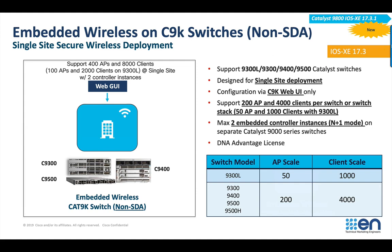This platform supports a scale of 200 APs and 4000 clients per switch or switch stack, and in a site you can go up to two switches, giving a total scale of 400 APs and 8000 clients in a single site. This is a totally non-STA deployment and does not need Cisco DNA Center for configuration or automation. It does however need Cisco DNA Advantage license, just like embedded wireless in STA mode on the 9K switches.